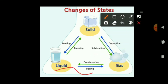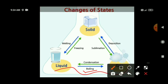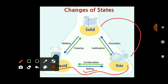Liquid to gas is called boiling, and gas to liquid is called condensation. When solid changes directly to gas, this is called sublimation — naphthalene balls are an example. When gas changes directly to solid, this is called deposition. For example, in cold countries like England, moist cold air changes into ice (frost). This deposition is a new phenomenon introduced in 11th standard.